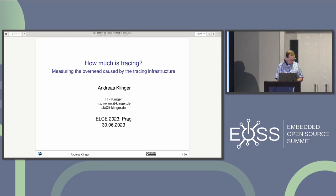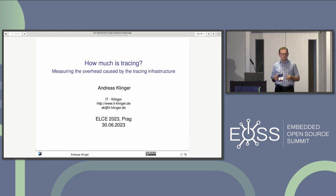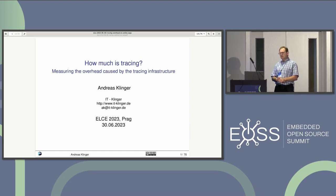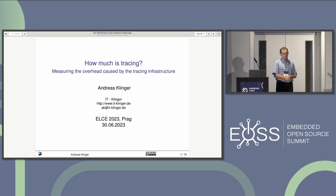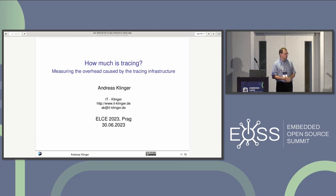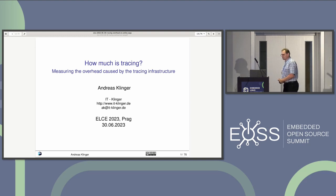I want to talk about how I did the measurement and how it's set up with the scope, because you can use the same measurement principle for many other things — not just for measuring tracing overhead. You can measure how long a protocol stack takes, measure boot time, or toggle a GPIO in the bootloader or Linux kernel. You can toggle GPIO pins almost everywhere, and that's the idea behind this talk.